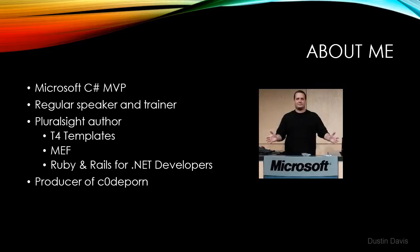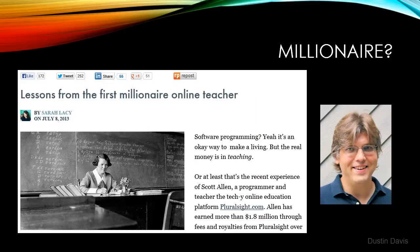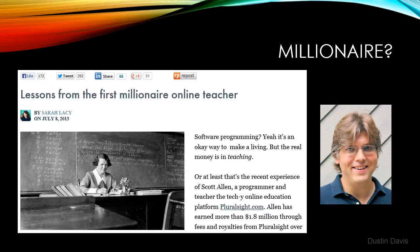So where does becoming a millionaire come into this? This man here is Scott Allen. He is one of the top authors at Pluralsight. This article, which was published earlier this year, talks about his rise to fortune via his course royalties. This specific article states that he has earned $1.8 million at the time of writing.